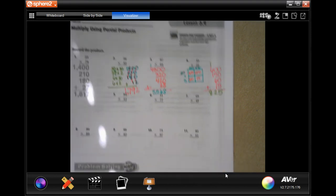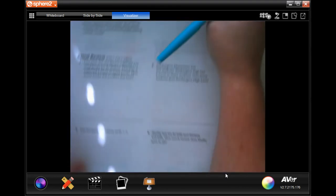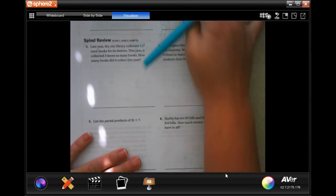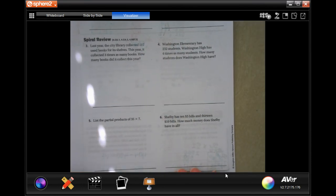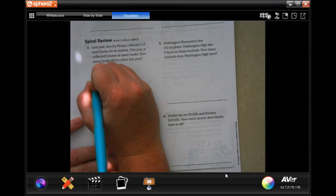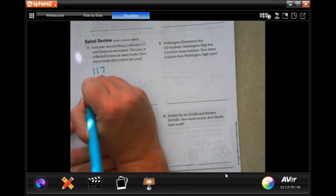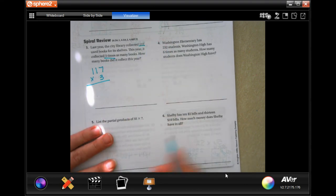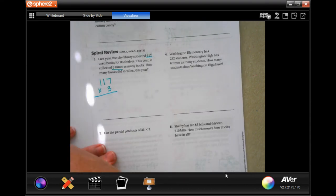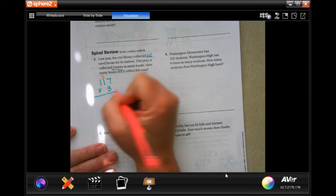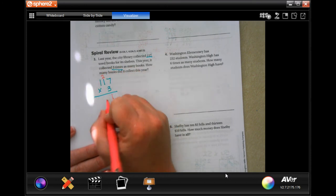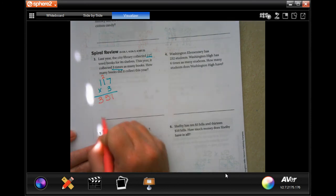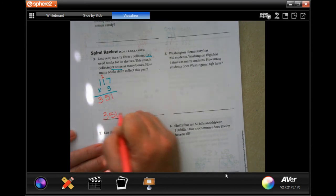We're going to go over to the back on the lesson check. You guys are totally going to do that. You absolutely can. We're going to go to the spiral review. Last year, the City Library collected 117 used books for its shelves. This year, it collected three times as many books. How many books did it collect? So 117 times 3. Collected three times as many. It's telling you three times. Multiply it. 3 times 7 is 21. Carry your 2. 3 times 1 is 3, plus 2 more is 5. 3 times 1. 351 books.